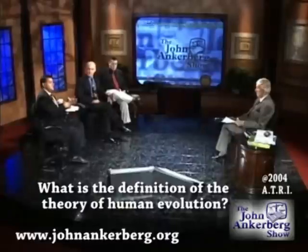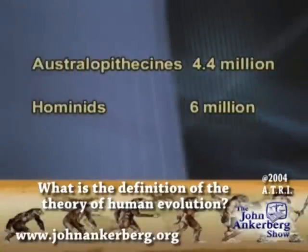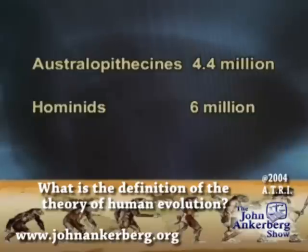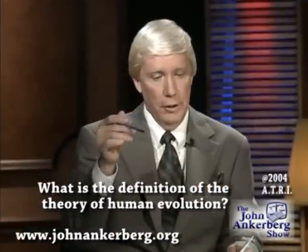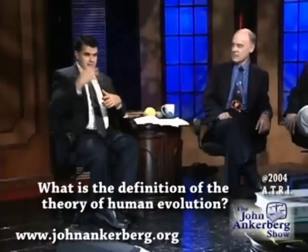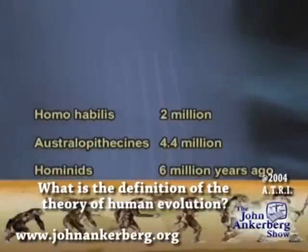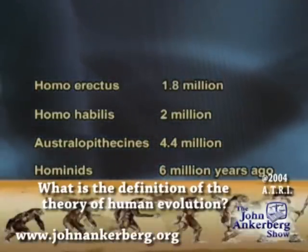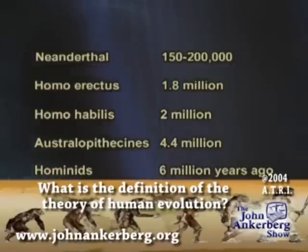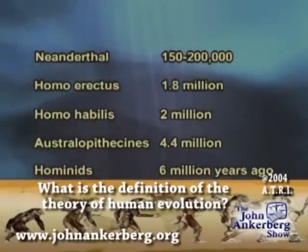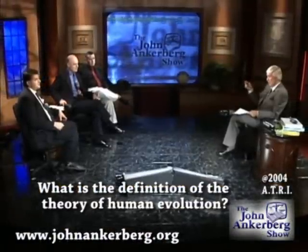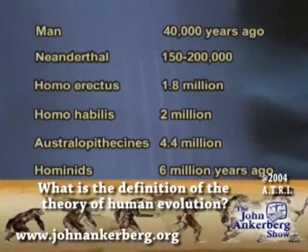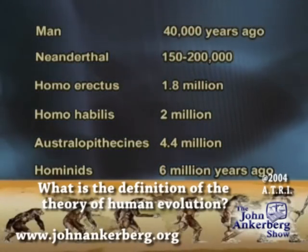We're using the word hominid to mean these ape-like animals that have the ability to walk erect — to walk on two feet. So we go from that creature before australopithecines to Homo habilis, the first homo bipedal primate, at around 2 million years ago. Then 1.8 million years ago was Homo erectus. And then you have Neanderthal around 150,000 to 200,000 years ago, with some evidence indicating they may have persisted to around 40,000 years ago. After Neanderthals, there's an explosion of modern human fossils in the 40,000 to 50,000 year timeframe.